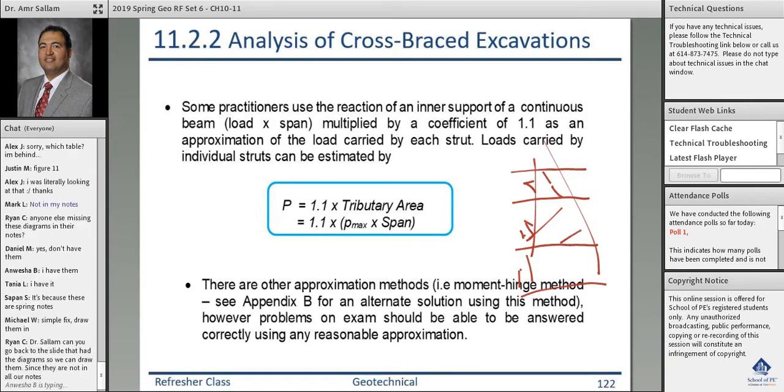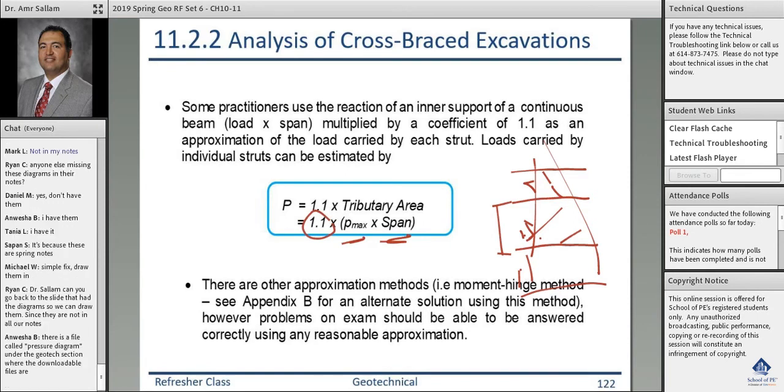So what we do is you see how much area every strut has, and you say that's what we call tributary area. Which is the load maximum times the span, times 1.1 to account for that it is an approximate solution.